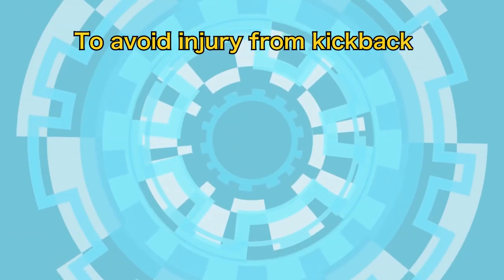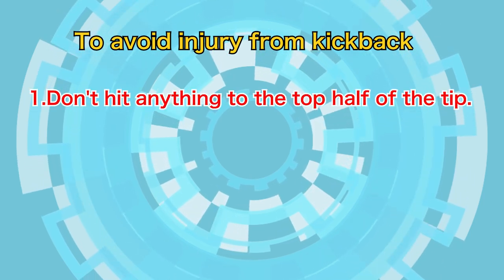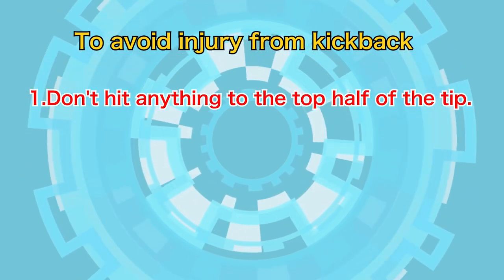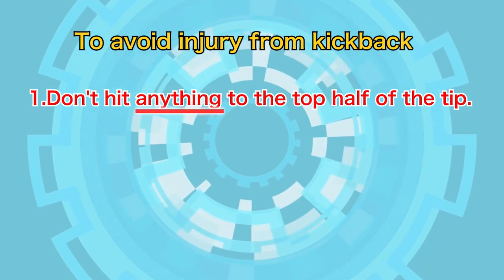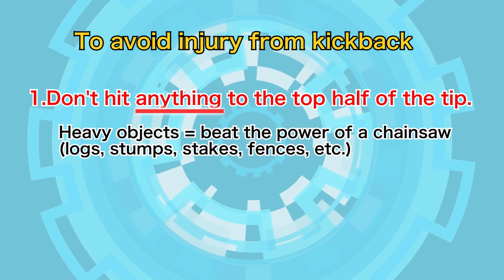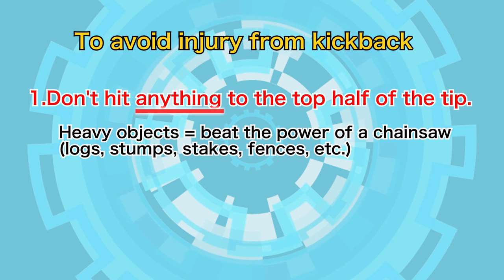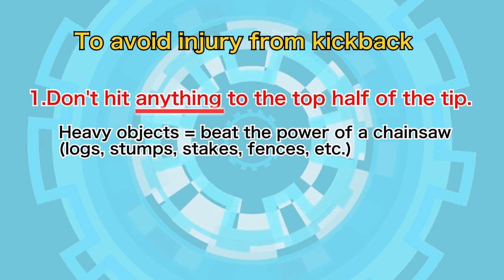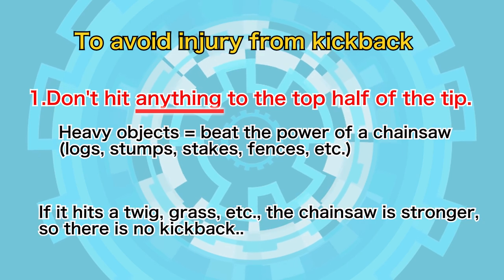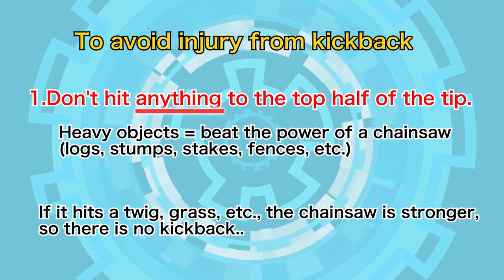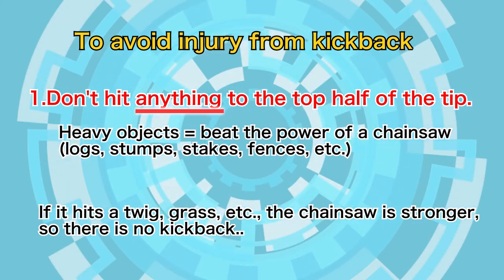So to avoid injury from kickback: first, don't let anything hit the top half of the tip — heavy objects like logs, stumps, as well as stakes and fences. If it hits a twig or grass, the chainsaw is stronger than them so there's no kickback from those.